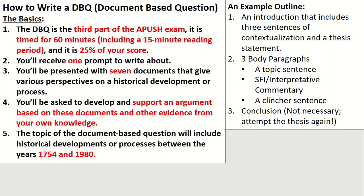So an example outline of a DBQ: you always want to start with an introduction that includes three sentences of contextualization and a thesis statement. You do want to include three body paragraphs, beginning with a topic sentence, sprinkling in some specific factual information — SFI for short — with some key terms. You do want to provide interpretive commentary; go beyond just showing what something is, show why it's significant. What did it amount to? What did it lead to? Build a bridge and show the larger significance of whatever evidence you use in your essay.